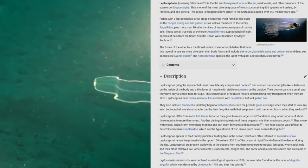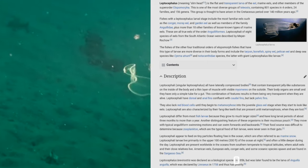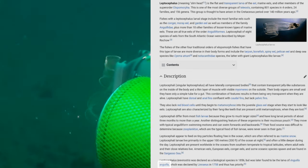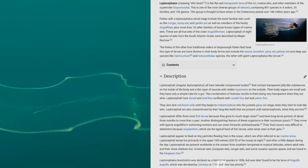Leptocephalus brevirostris was declared as a biological species in 1856, but was later found to be the larvae of Anguilla anguilla, which was declared by Linnaeus in 1758 and thus has priority.